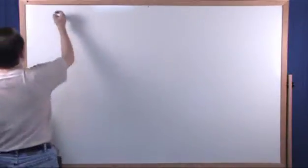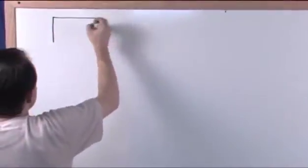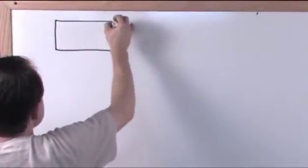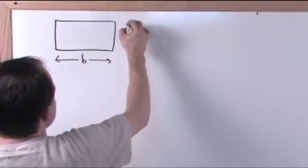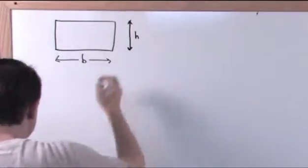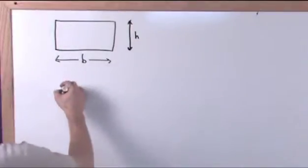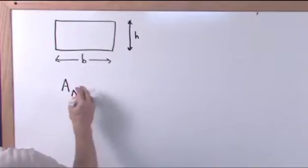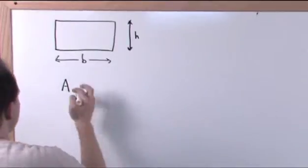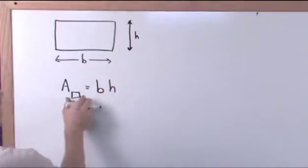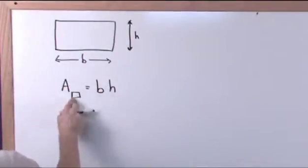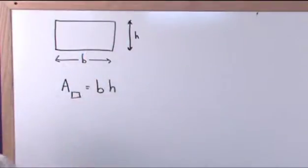First, let's work with what we already know. Let's look at a rectangle because that's what we already know. This is a rectangle and it has a base and it has a height. You already know that the area of this rectangle is equal to the base times the height. The area of the rectangle is base times height.